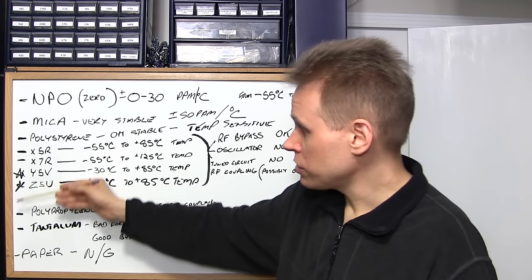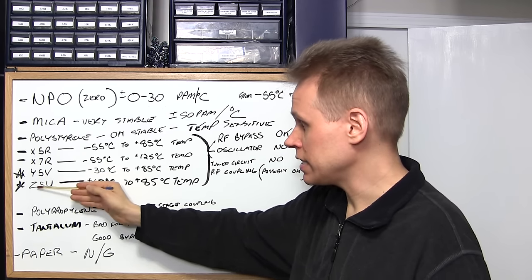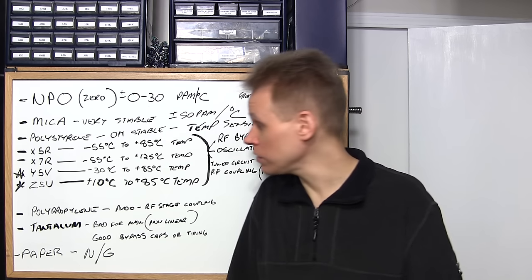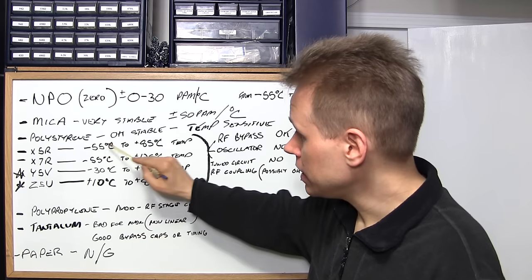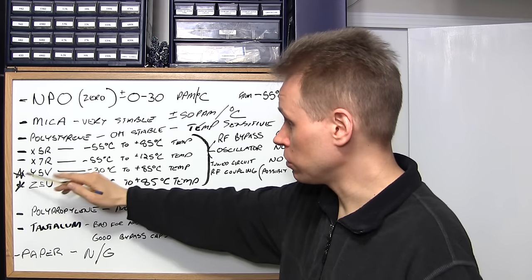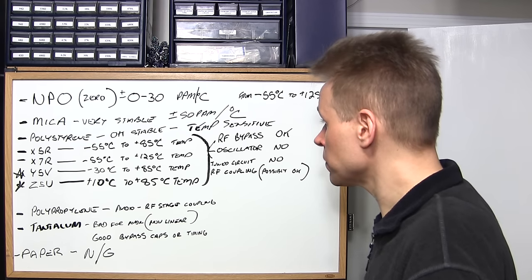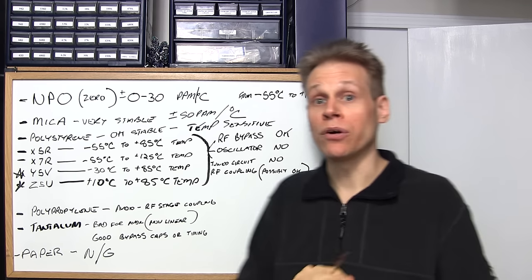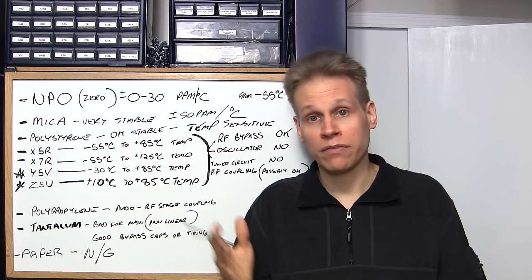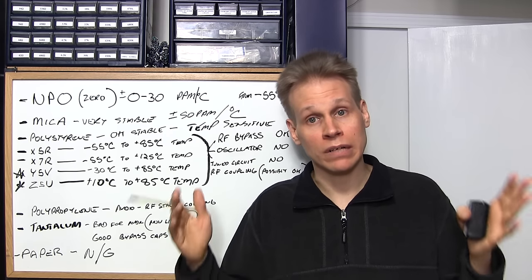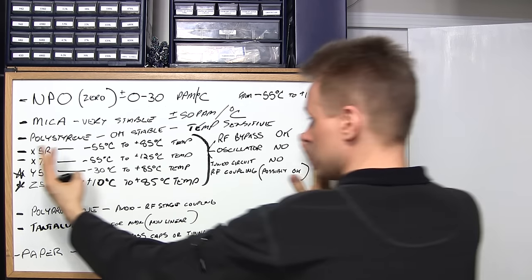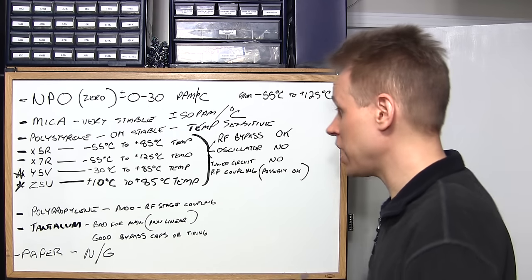These capacitors here are ceramic style — the X5R, X7R, Y5V, and Z5U — either disc style capacitors with a leg on each side or small chip capacitors for surface mount use. The X is the lower temperature, the 5 is the higher temperature, and the R is the actual usable range. These capacitors are great for RF bypass but you never ever want to use them in any oscillator circuits or tuned circuits. RF coupling is okay from stage to stage as long as there's no interlock between stages where one stage would affect the other.